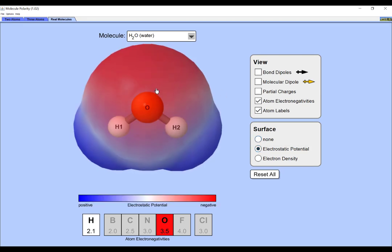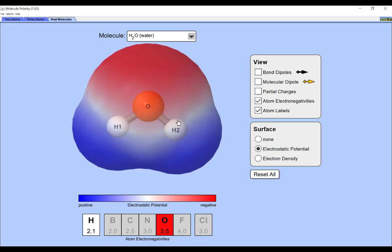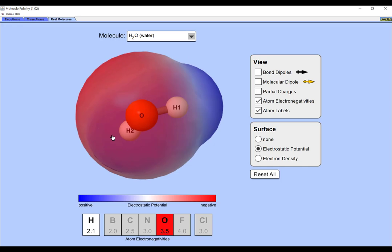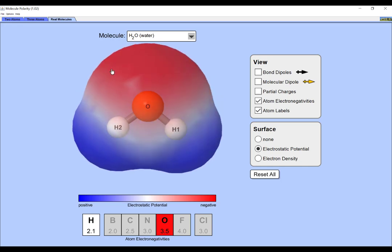The red colour around the oxygen indicates greater electron density. Because the oxygen is more electronegative, the bonding electrons are spending more time around it than they are around the hydrogen atoms.